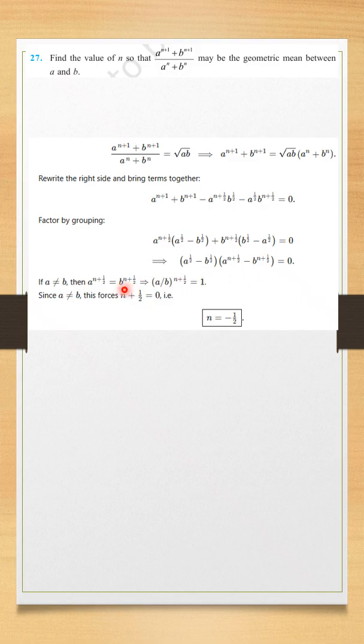Now, if a is not equal to b, we can write this equal to 0. So, this expression will become a raised to the power n plus 1 by 2 is equal to b raised to the power n plus 1 by 2. We can write this as a by b whole raised to the power n plus 1 by 2, this is equal to 1. When n plus 1 by 2 is zero, only then can the expression equal 1. So, the value of n will be minus 1 by 2.